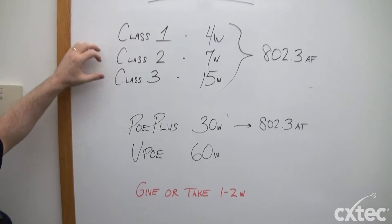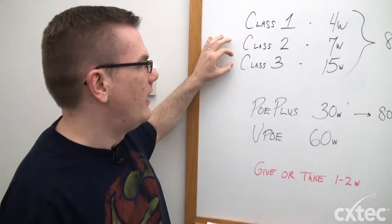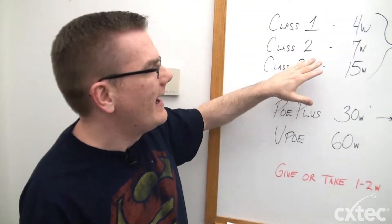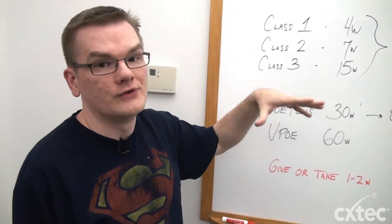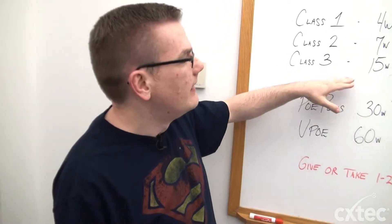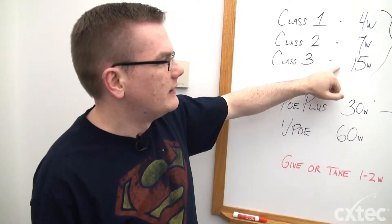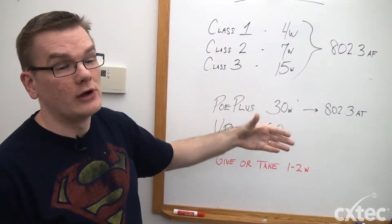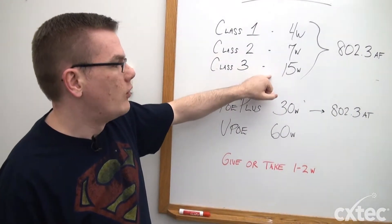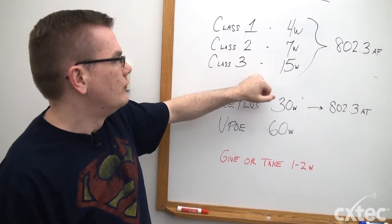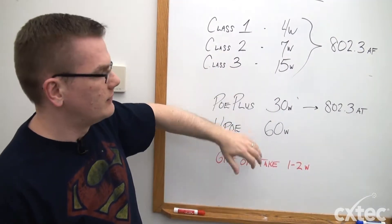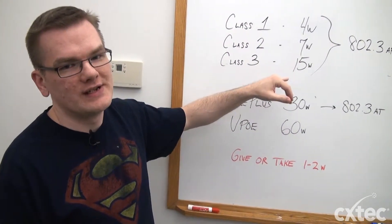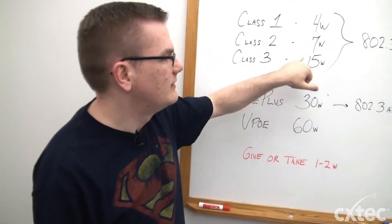Why does all of this matter? The majority of devices today hover in the class two to three range — that would be the most common. Things in the seven-watt range are devices like phones or IP cameras. In class three you'll see things like access points or even color phones that may require something in the 15-watt range. And 12.95 watts is probably the most common number I see referring to class three, but that's still within that range.